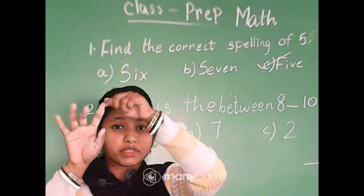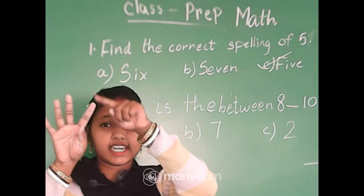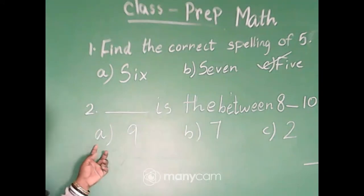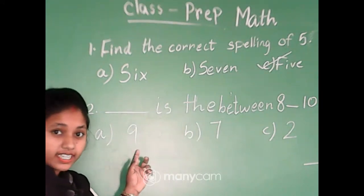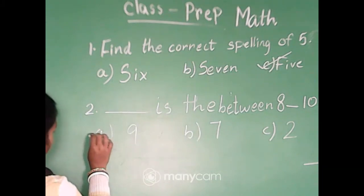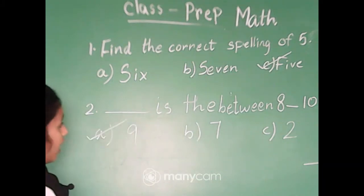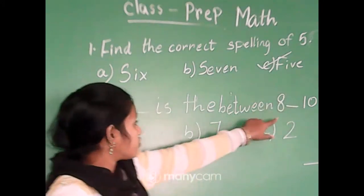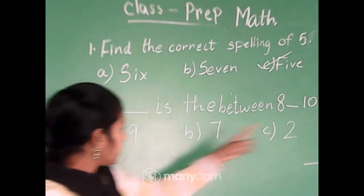So which is the between number? It is 8, 9, 10. So option A, 9. Yes, it is correct. We will take option A. The between number is 9. So 8, 9, 10. Next step.